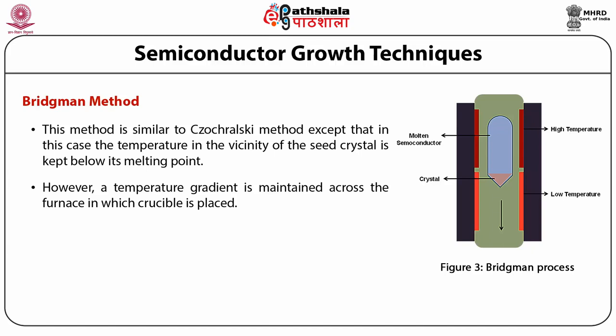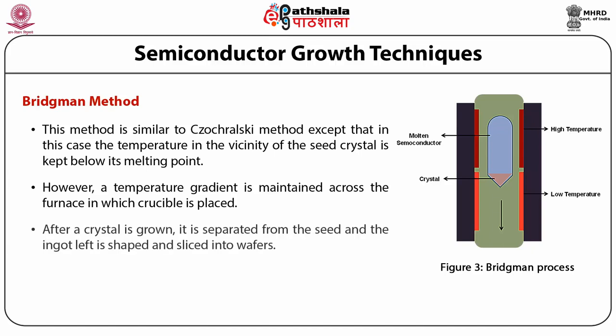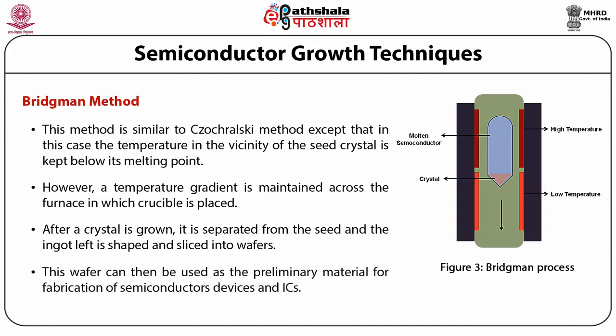In the Bridgeman method, the seed crystal is also placed in the crucible along with the polycrystalline material. However, a temperature gradient is maintained across the furnace in which the crucible is placed. After a crystal is grown, it is separated from the seed, and the ingot is shaped and sliced into wafers, which can then be used as the preliminary material for fabrication of semiconductor devices.